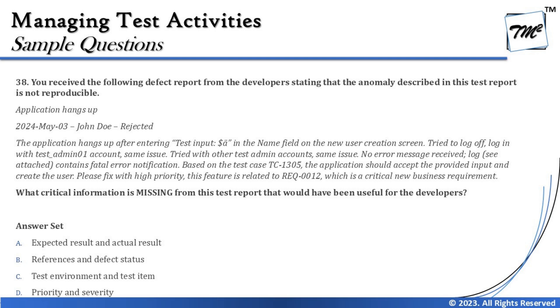The last question of Chapter 5 is Question 38, which is a little tricky and includes related information to read through carefully. You have received the following defect report from the developers stating that the anomaly described is not reproducible. Note: the defect report was raised by a tester and returned by the developer with a comment. In simple terms, a defect report you raised has been returned to you by the developers.